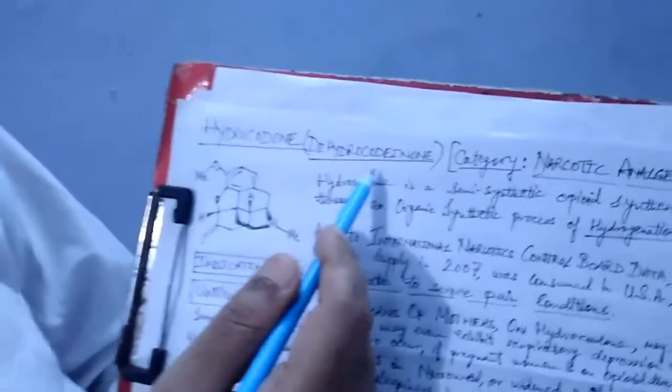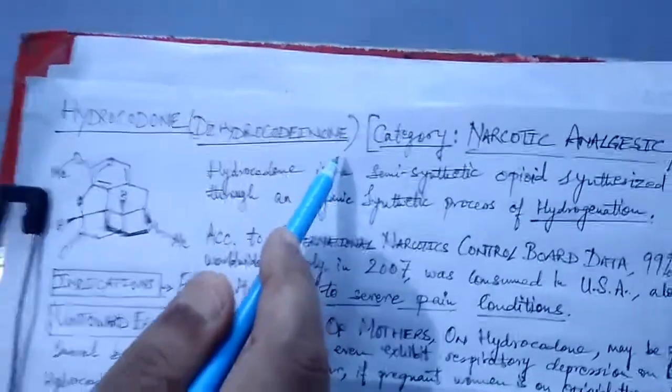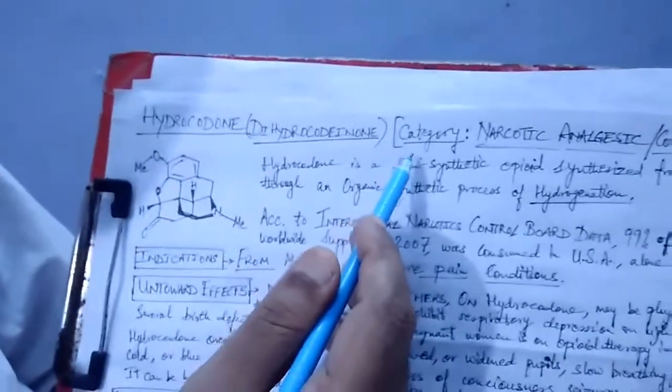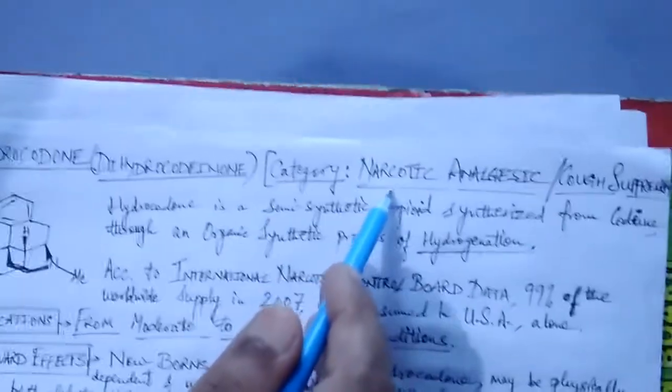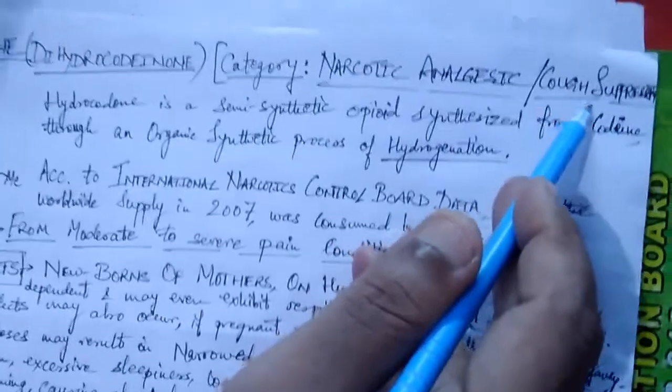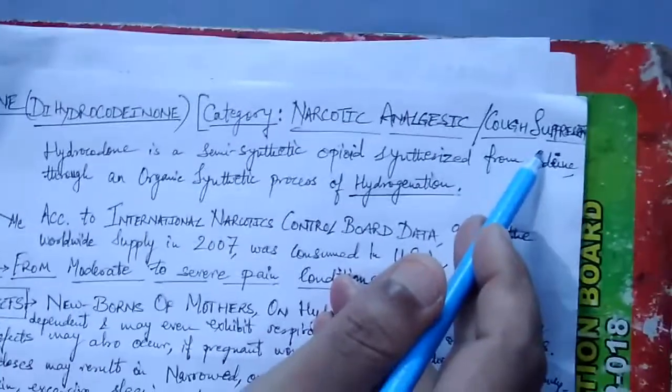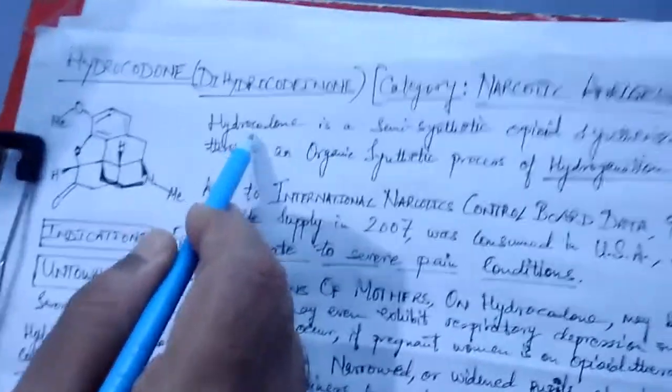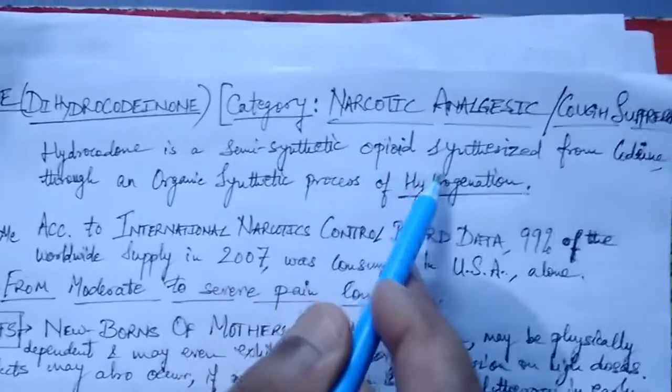Today, in our series 'Know Your Drugs,' we will talk about hydrocodone. Hydrocodone, also alternatively called dihydrocodeinone, is by its category a narcotic analgesic and also a cough suppressant or antitussive. Hydrocodone is a semi-synthetic opioid.